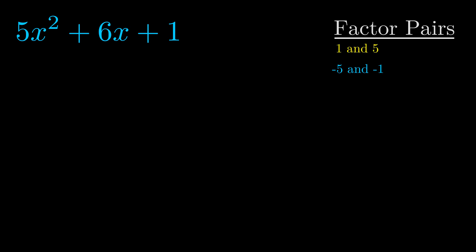And really this is the only factor pair that we need. Now once we have this factor pair what we want to do is we want to use it to split up the b value.